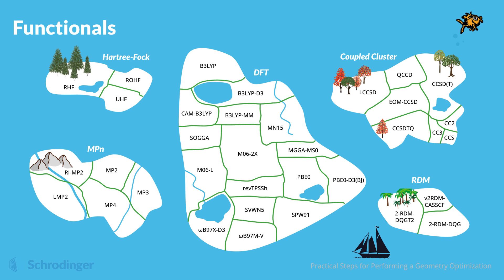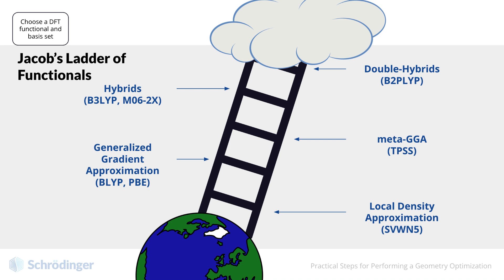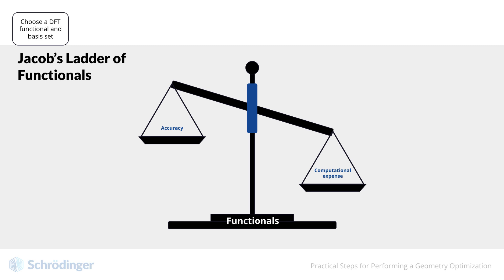We refer to the ever-improving series of functionals as Jacob's Ladder. The higher on the ladder that we climb, the closer we get to the exact functional. However, as we climb, the more expensive the calculation gets. For most calculations, we may stop somewhere in the middle of the ladder to balance the cost and accuracy.